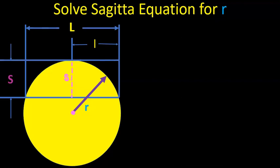Hello everyone, in this video I'm going to show you how to solve Sagitta equation for r. The Sagitta equation is given as s equals r minus the square root of r squared minus l squared.